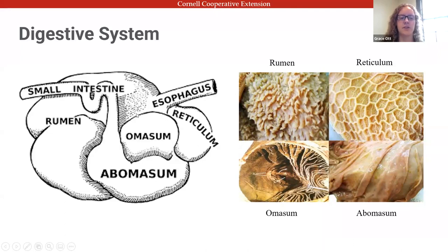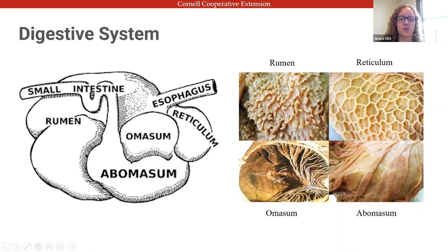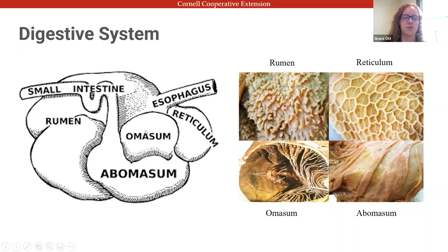As the feed becomes smaller and smaller in particle size through chewing and microbial breakdown, it is filtered through the reticulum, which catches smaller particles and moves them to the omasum. The omasum has many folds to increase surface area for water absorption. Once broken down and water absorbed, feed moves to the abomasum — the 'true stomach' — which has hydrochloric acid and digestive enzymes for chemical breakdown, and then moves on to the small intestine.